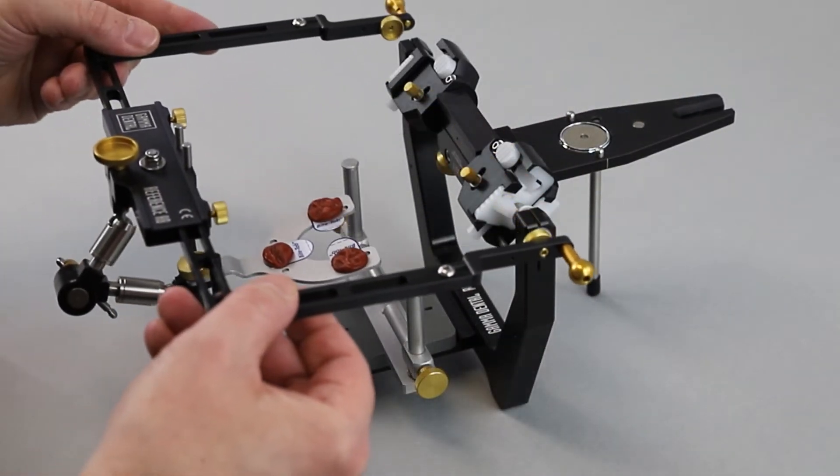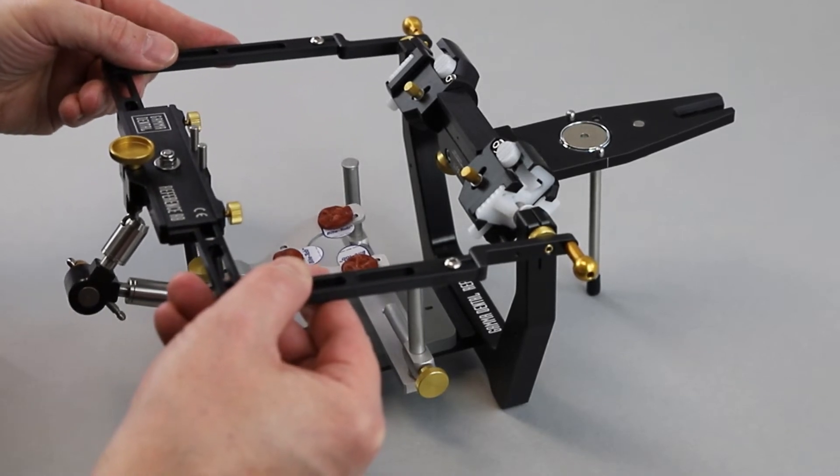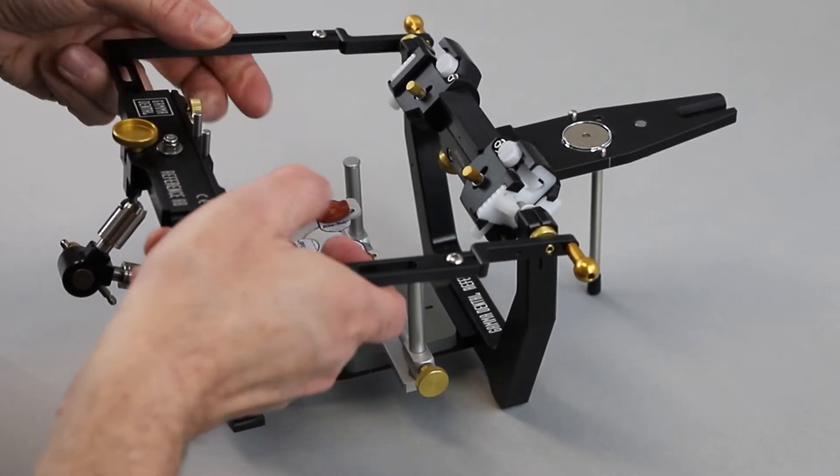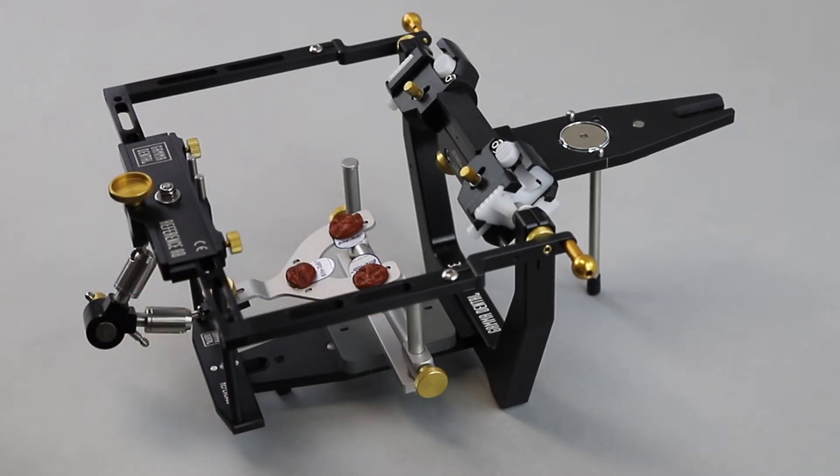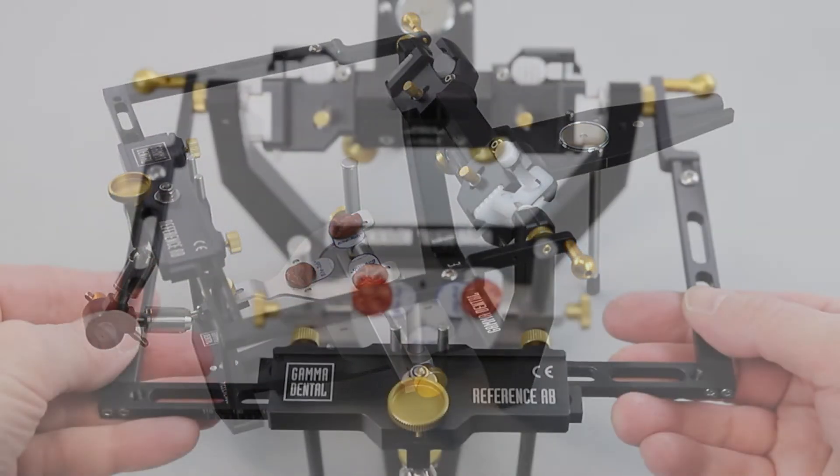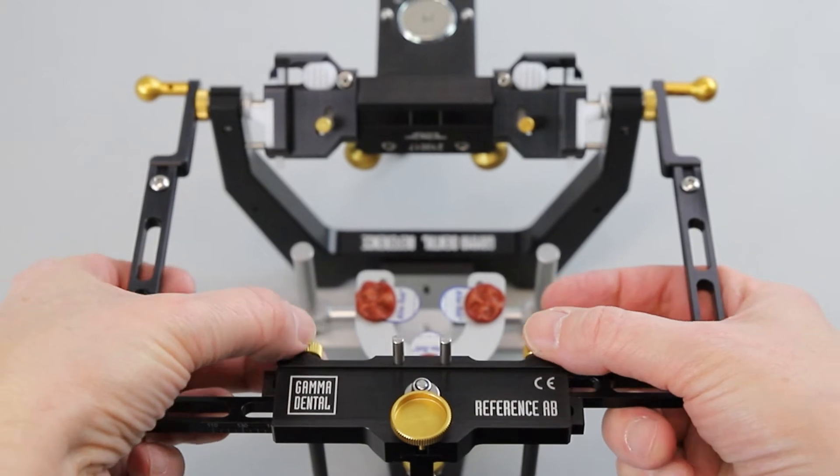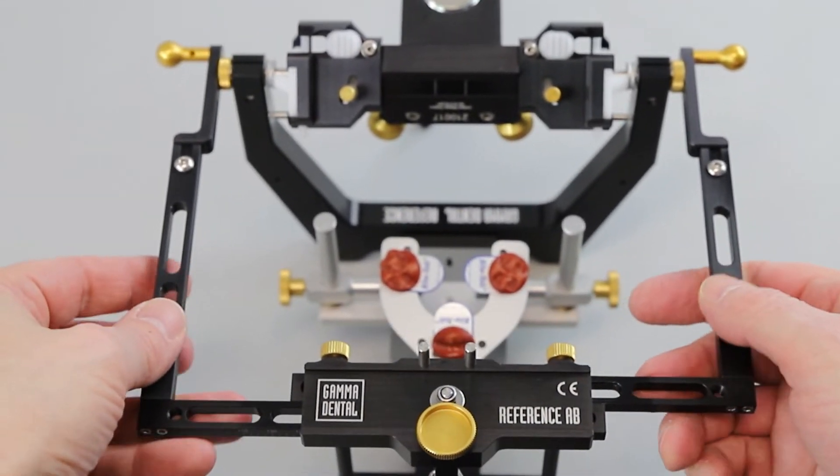The adapter plates can now be inserted to the corresponding casings. To do so, the reference AB face bow is pushed together gently but firmly until both guides slide firmly in place. Next, the face bow is placed on the face bow support and the anterior bow fixing screw is tightened, thus locking the bow.